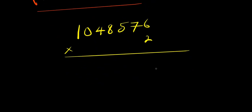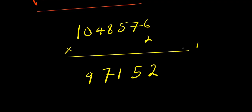Working through the multiplication of 1,048,576 times 2 digit by digit: 2 times 6 is 12, carry 1; 2 times 7 is 14 plus 1 is 15, carry 1; 2 times 5 is 10 plus 1 is 11, carry 1; 2 times 8 is 16 plus 1 is 17, carry 1; 2 times 4 is 8 plus 1 is 9; 2 times 0 is 0; 2 times 1 is 2. So 1,048,576 times 2 equals 2,097,152.